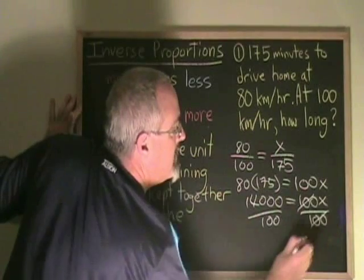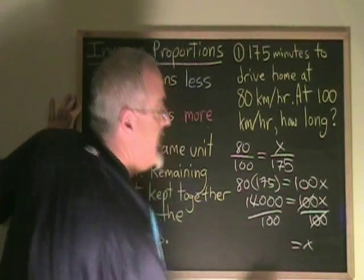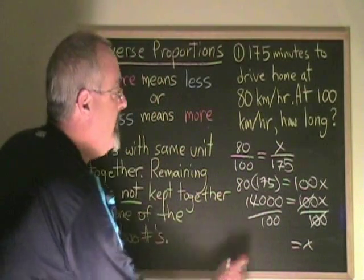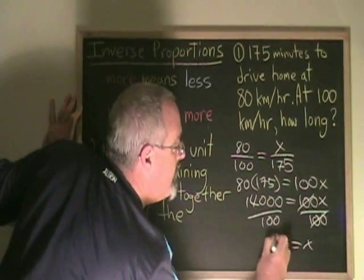These cancel. My x is now isolated. And 14,000 divided by 100 is 140.